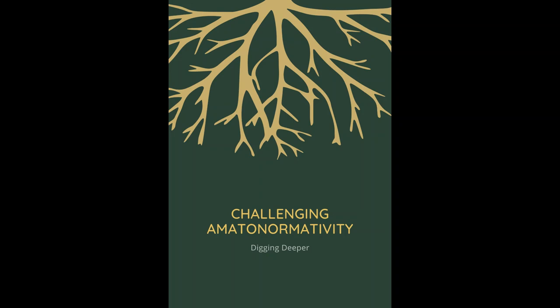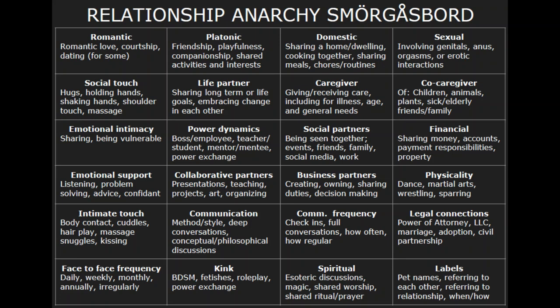For this, you can use the relationship anarchy smorgasbord, which consists of activities and attributes that you and another person can mutually decide to include in your relationship. You can view them as building blocks for forming your relationship. You don't have to do everything within a block, though. For example, if you want to have social touch in your relationship, you can choose to only include hugs and holding hands, but not massages. You can see the relationship anarchy smorgasbord on the screen, but you can also find it in the text versions of the workbook, and there's also alt text provided within the PDFs and Google Docs. Relationship anarchy is inherently anti-amatonormative in that it is non-monogamist and does not place romantic relationships as the most important. RA doesn't and shouldn't only challenge amatonormativity on an individual level. Community interdependence is a key tenet of RA, exemplified by communities — not couples — which challenges couple-centricity and coupledom, the nuclear family, and resists monogamy.